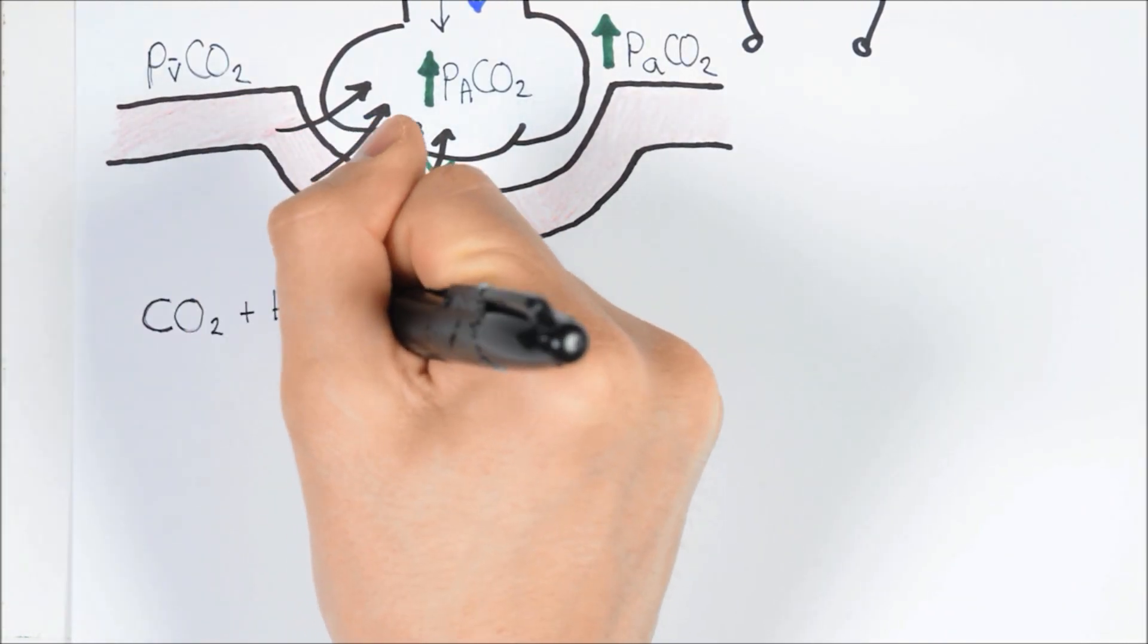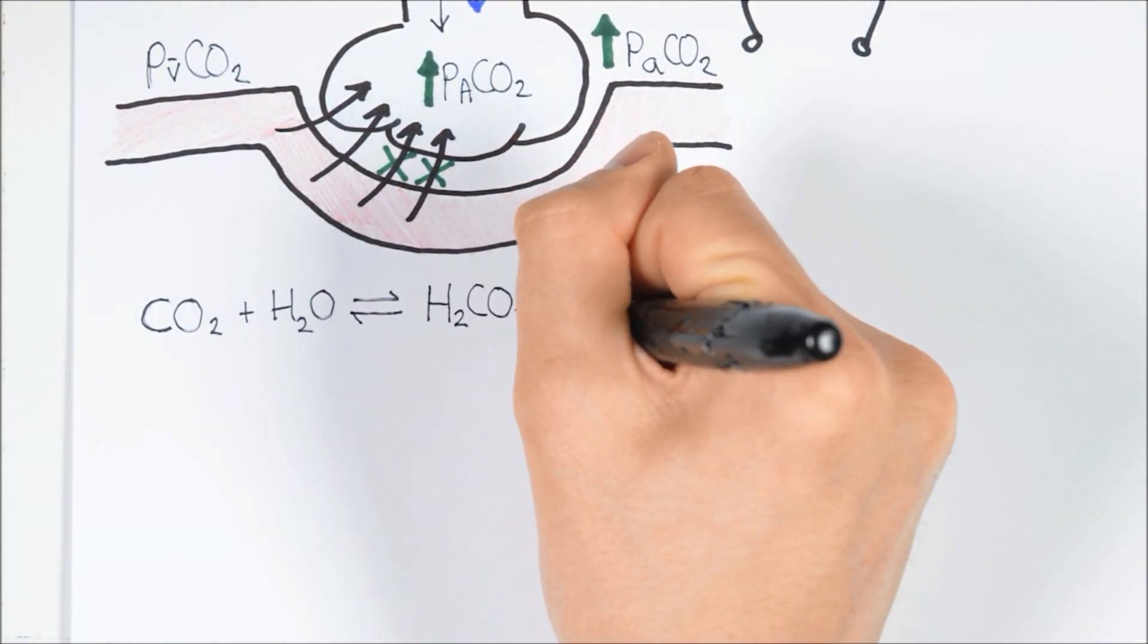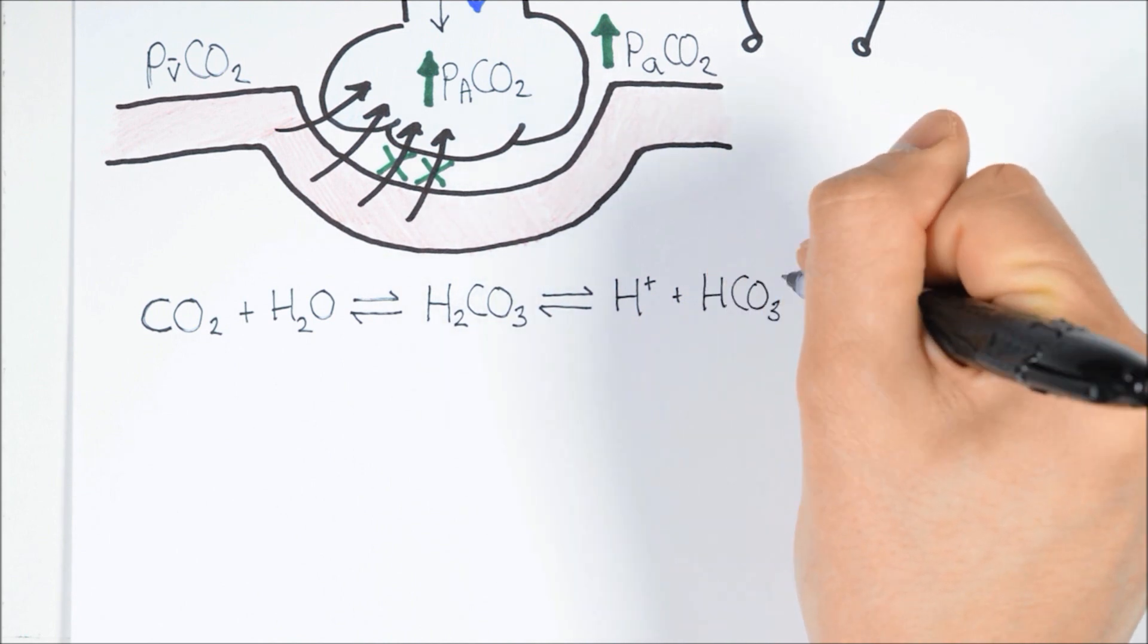Even though it isn't strictly an acid, CO2 is often referred to as the respiratory acid because of the way it combines with water to form carbonic acid. Carbonic acid is a weak acid which dissociates into protons and bicarbonate, and this whole equation is in an equilibrium, so if something in it changes, it will shift the balance of the chemical reactions to correct it.